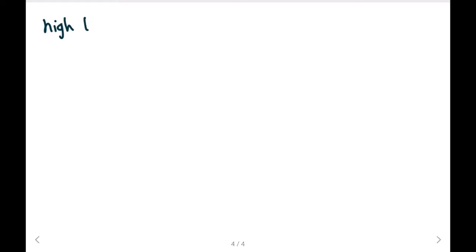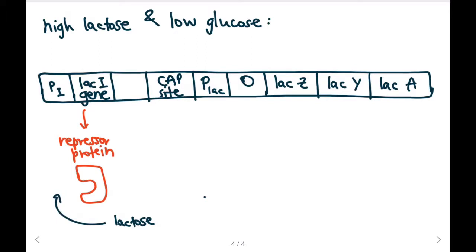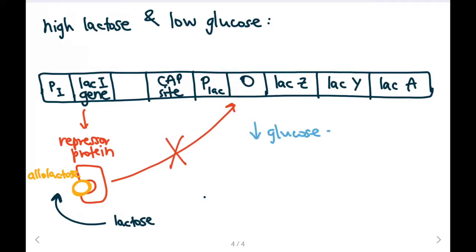But what if we had high lactose and low glucose levels? If we have high lactose and low glucose, then our DNA sequence for our LAC operon will still produce the repressor protein from the lacI gene. Here's our repressor protein, and high lactose levels means that allolactose will bind to our repressor protein. Here allolactose will bind, and it will change the shape of our repressor protein so that it's unable to bind to the operator. Low glucose levels will correlate to high levels of cyclic AMP, and cyclic AMP will bind to the CAP molecule, which will then bind to our CAP site.